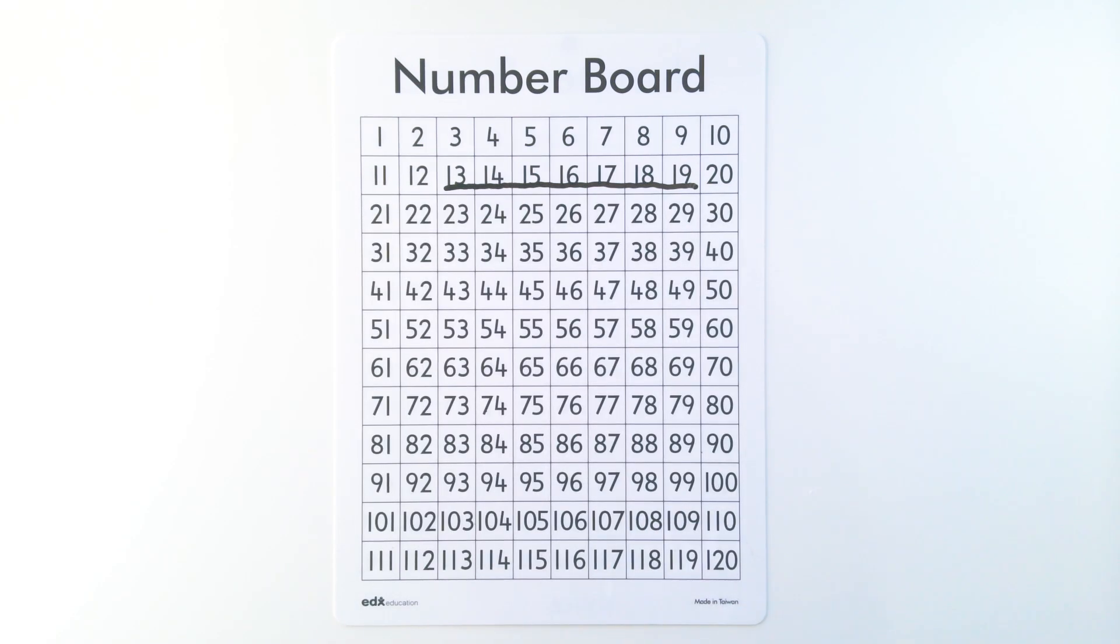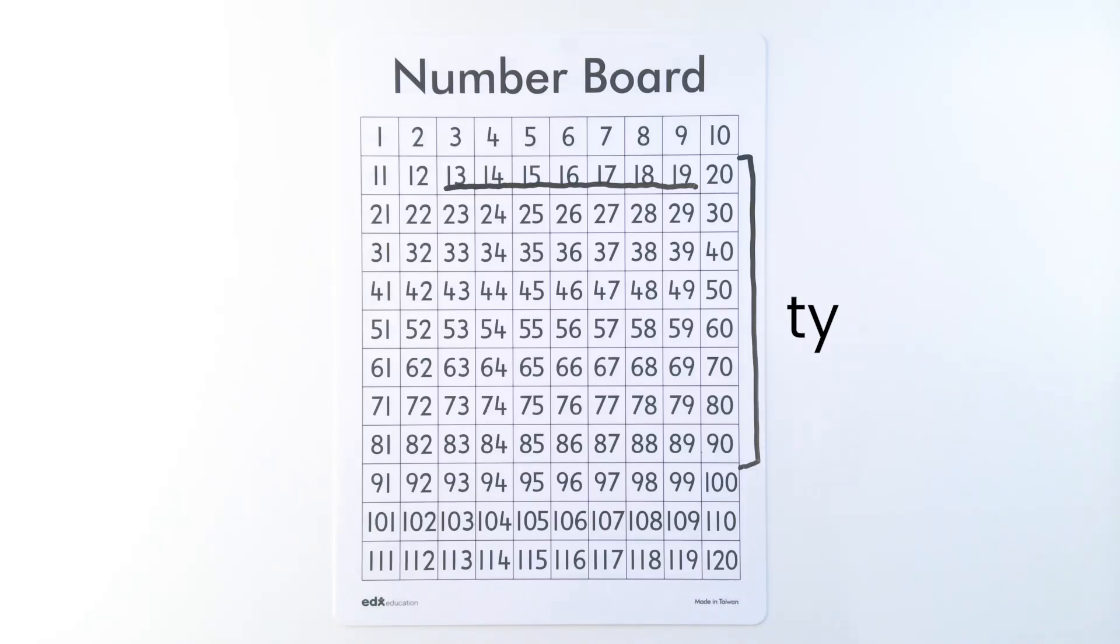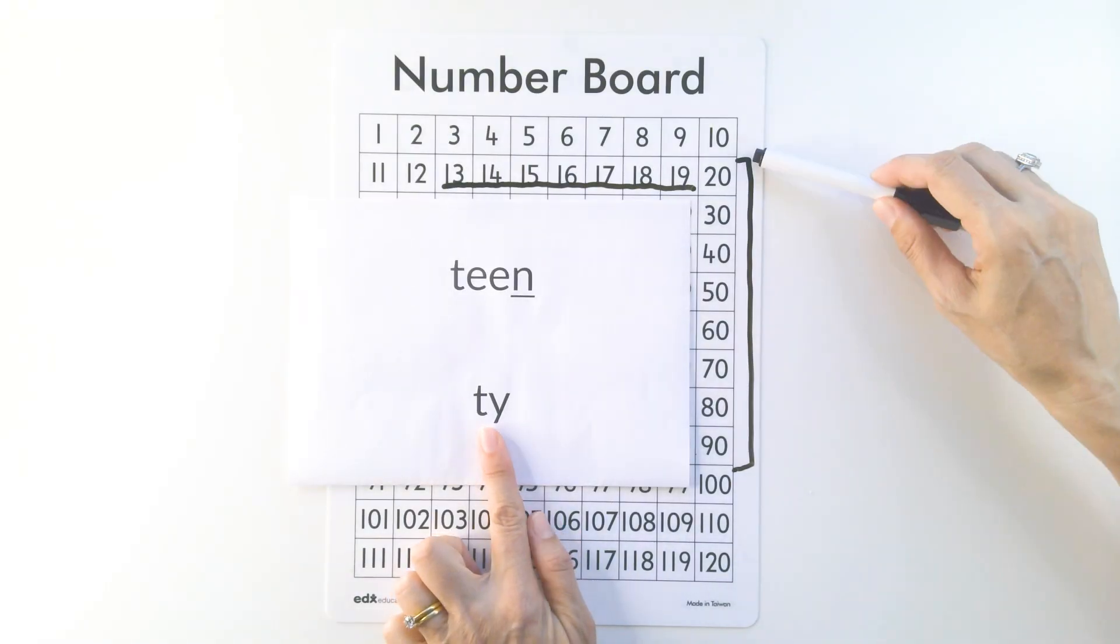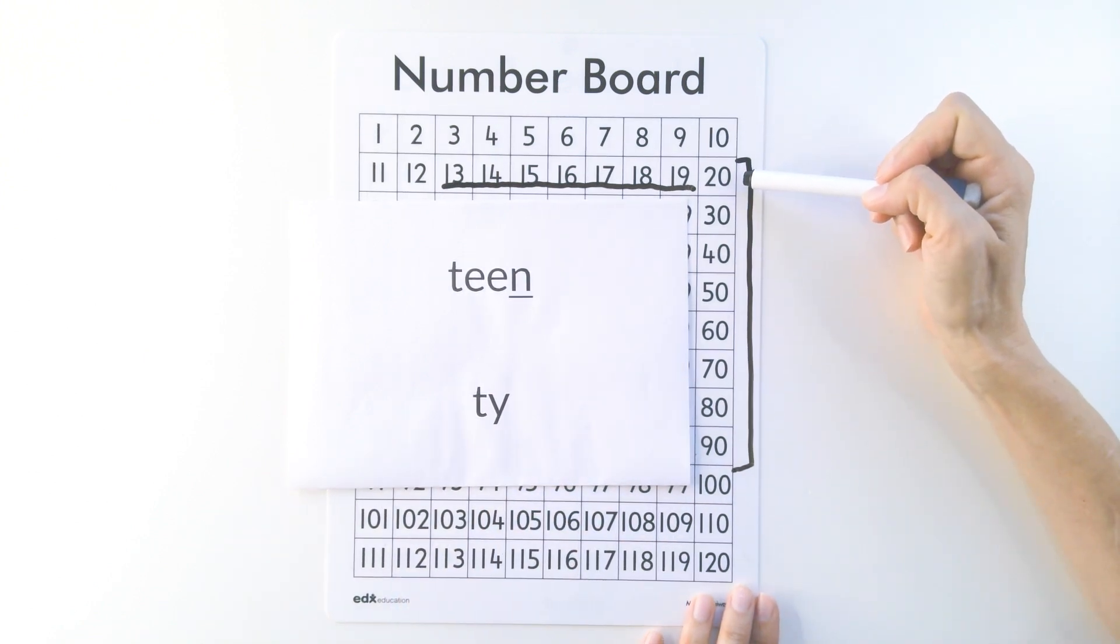Now that is a very different sound to these numbers. These numbers are our ty numbers. Our ty numbers down here don't have the n sound. I'll start saying them and then you can join me. 20, 30. Can you go with me?